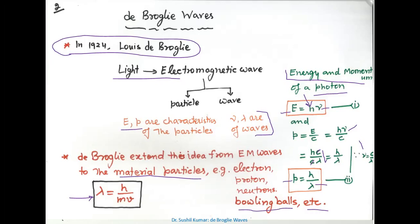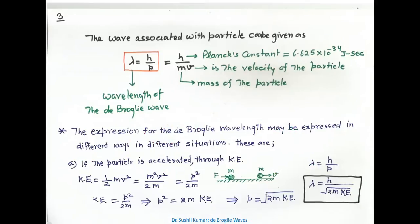In this formula, lambda = h/mv, on the left-hand side there is a wave (wavelength), and on the right-hand side there is momentum of the particle (mv). So by this formula, wave nature and particle nature are associated. The value of Planck's constant is 6.625 × 10⁻³⁴ joule-second. This expression lambda = h/mv is different for different situations — the de Broglie wavelength may be expressed in different ways depending on the situation.